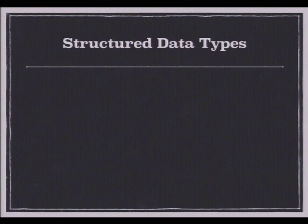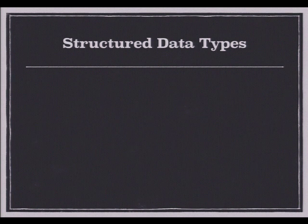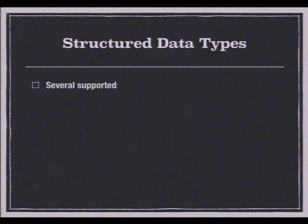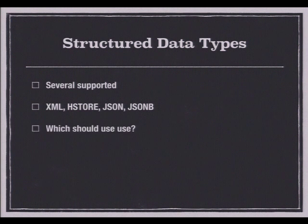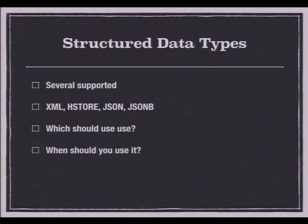I'm going to talk about the structured data types in Postgres. I was calling them unstructured data types — I can't make up my mind, because compared to SQL they're unstructured, but internally they're structured, just not consistently. In Postgres there are several different types of structured data supported: XML, HStore, JSON, and in 9.4, any day now, JSONB.